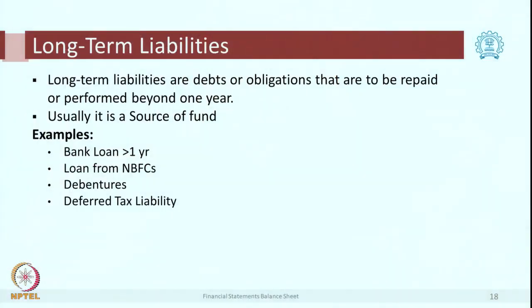Liabilities are present obligations — these are dues which a company or enterprise has to pay. You can reasonably estimate the amounts and they would result in an outflow in future. There are long-term liabilities and short-term liabilities. Long-term examples are mostly bank loans, loans from NBFCs, or deferred tax obligations. Short-term or current liabilities include bank overdraft, payables or creditors, and a variety of outstanding expenses.